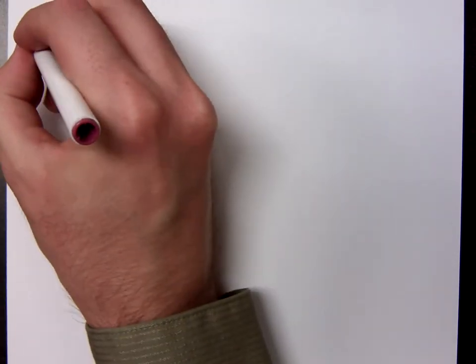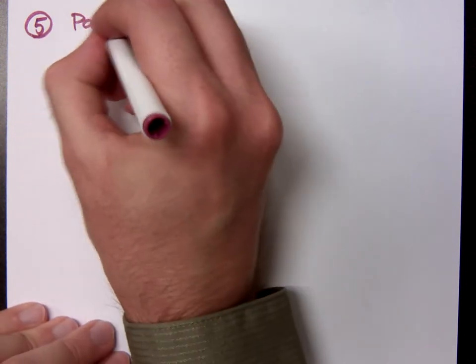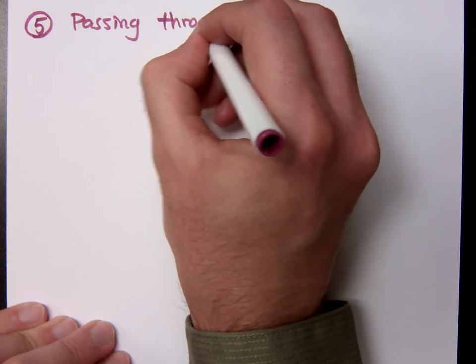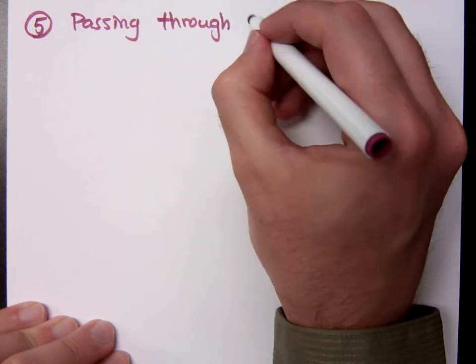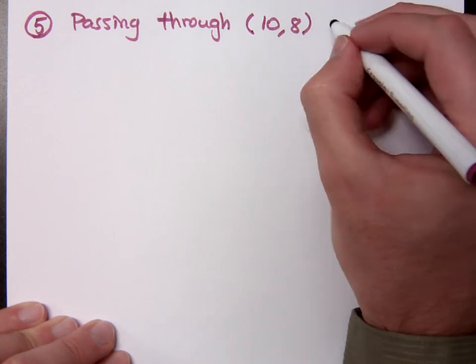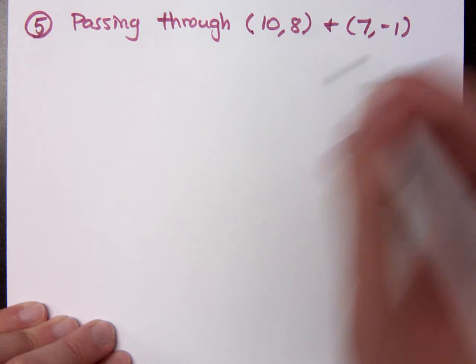All right, let's look at this problem. Let's look at finding an equation for this line, a line passing through the points 10, 8 and 7, negative 1.